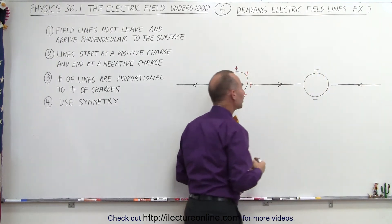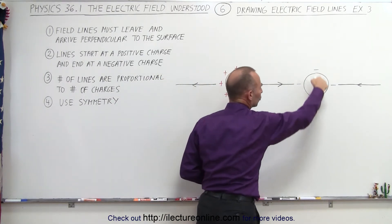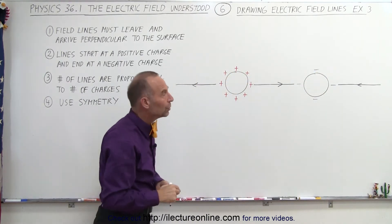But now what do we do with the rest? There's six more charges, three up here and three up here. And we only have two charges over here. What do we do now?